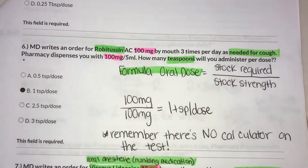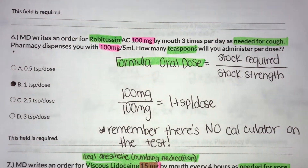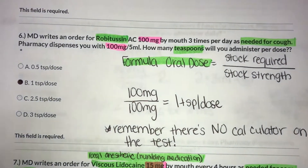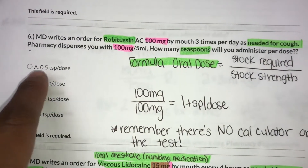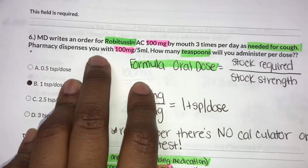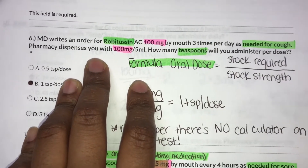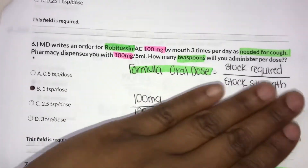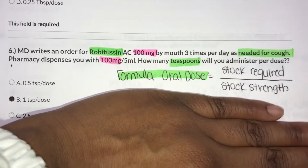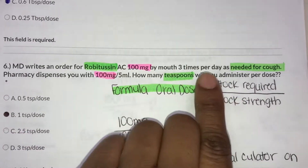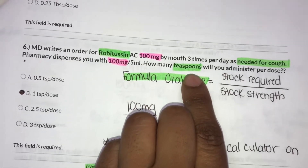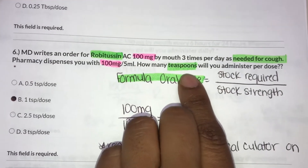For the first one, it says the MD writes an order for Robitussin AC 100 mg by mouth. Basically, read the question and what you're going to be using is the oral dose medication formula. The only reason you know that is because it mentions tablespoons, which is something you take by mouth.